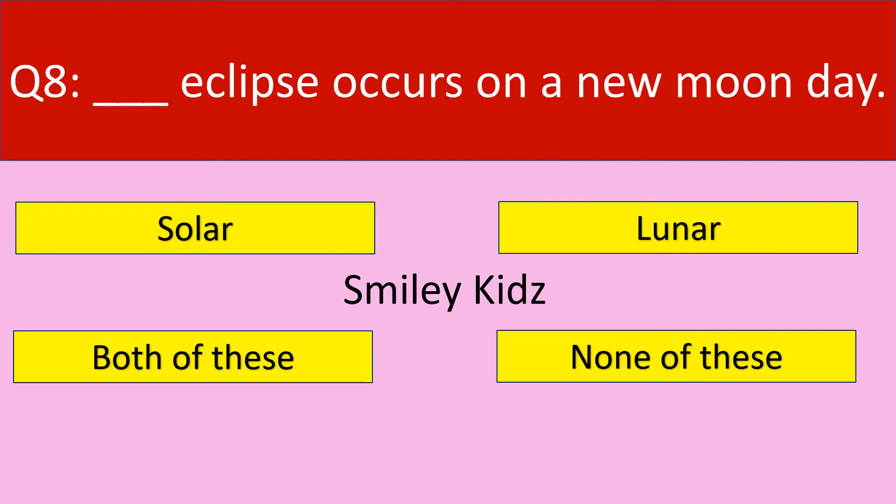Question number 8. Dash eclipse occurs on a new moon day. Your options are: Solar, Lunar, Both of these, None of these.